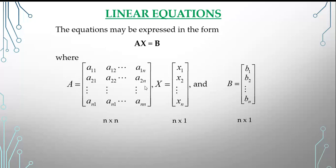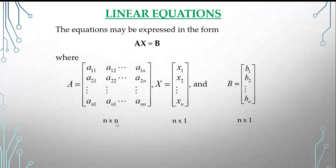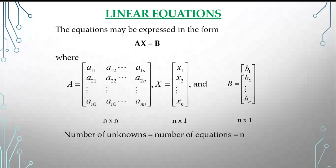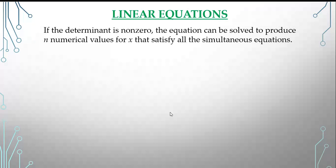We write the system as AX = B, where A, X, and B are matrices. A is the n×n coefficient matrix, X is the n×1 column matrix of variables x1, x2, ..., xn, and B is the n×1 column matrix of constant terms. Because the inner dimensions match, we can multiply A and X to get B. If the determinant of A is non-zero, the equations can be solved to produce n numerical values for x satisfying all simultaneous equations.